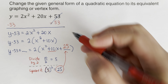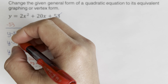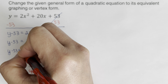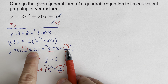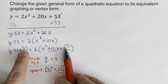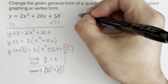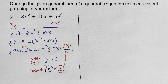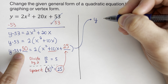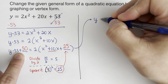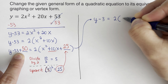The 25 inside is multiplied by 2, so we add 2 times 25, which is 50, to the other side. Simplifying, negative 53 plus 50 is negative 3. The equation becomes y minus 3 equals 2(x squared plus 10x plus 25).